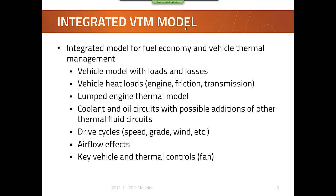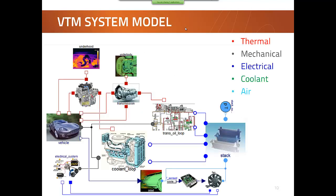Looking at the model, you can see it consists of different parts: a coolant loop model coupled to the heat exchanger stack, which is also coupled to the transmission. There are simple thermal models of the engine, under-hood compartment and transmission. Very simple models for the electrical system are included, as well as a fan and heat exchanger stack which captures the effects of wind speed through the stack.